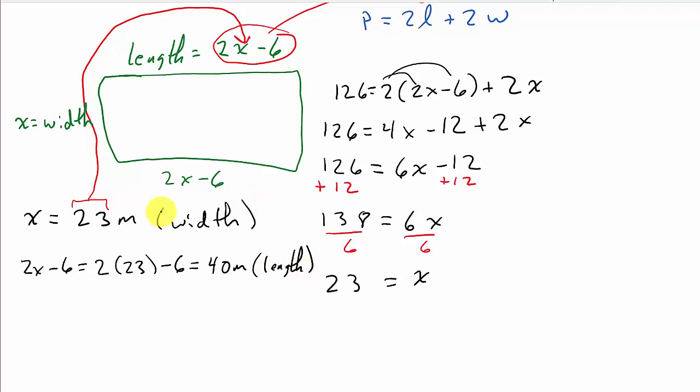And this is our length. And so here's your answer. The 23 meters is your width, and the 40 meters is the length. So I hope this video helped. Check out my other videos. Give me a like, share, and subscribe. And thanks for watching.